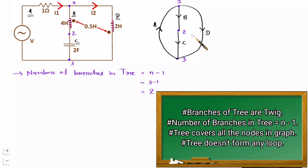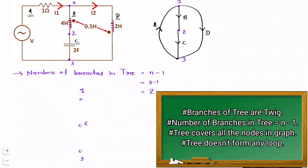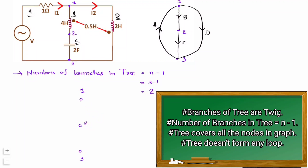To plot the tree, draw three nodes first — node 1, node 2, and node 3. The key properties: a tree does not form any closed loop and it must cover all nodes. So it covers nodes 1, 2, and 3 without forming any closed loop. Here we have one branch and a second branch — two branches total, covering all nodes without forming any loop. This is the tree.